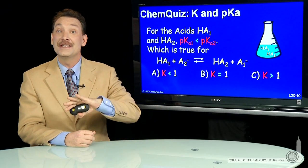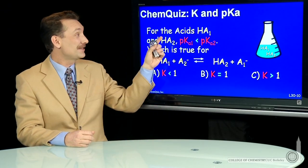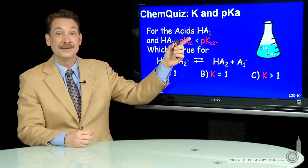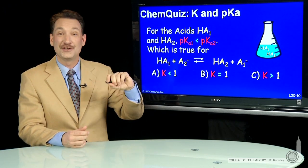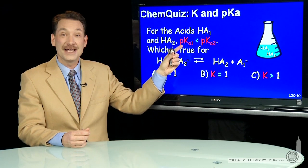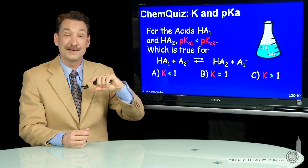Let's look at a couple acids reacting with each other. So here's acid HA1, just a generic acid, and HA2, generic acid. They have pKa's, where the pKa1 is less than pKa2.